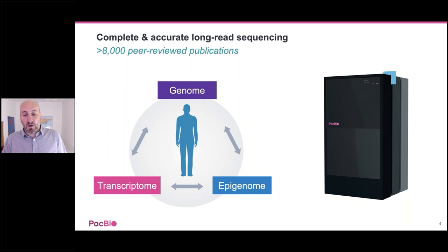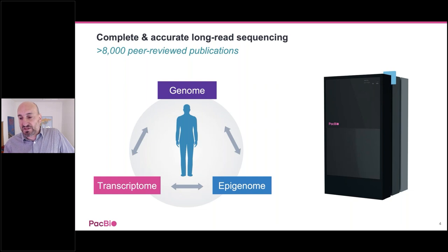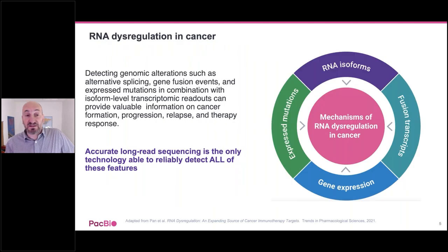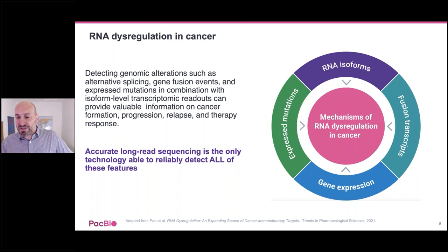By leveraging the most accurate long-read sequencing technology available, we can now offer the most complete genomes, transcriptomes, and epigenomes. We recently announced methylation calling detection directly from whole genome sequencing to look at the epigenome. We know that cancer is a disease of the genome, but a lot of the effects of these mutations show up at the level of RNA. On the right, you can see examples of different types of RNA dysregulation in cancer — splicing isoforms, RNA fusions, expressed mutations, RNA editing, et cetera — which have all been shown to drive tumorigenesis and help us understand this terrible disease.